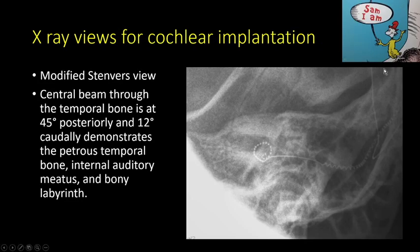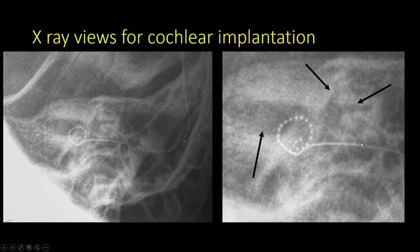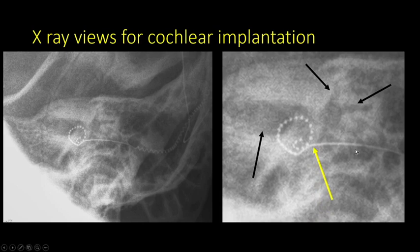The view most commonly used for post-implant x-rays is the modified Stenvers view — an oblique view at 45 degrees posteriorly and 12 degrees caudally — which shows the petrous bone, IAC, and bony labyrinth in better detail. This allows visualization of the entire cochlear electrode, the internal auditory canal, and the superior and lateral semicircular canals. The electrode can be seen entering and coiling more than 270 degrees within the cochlea, and the cochleostomy site is identifiable.